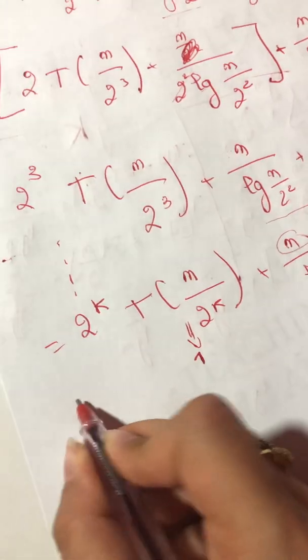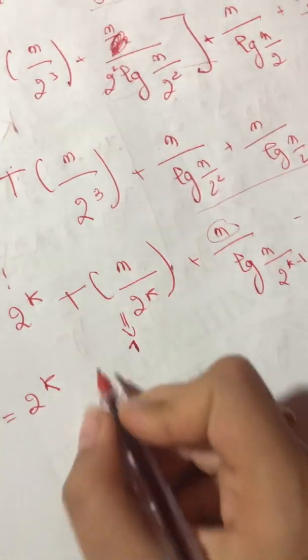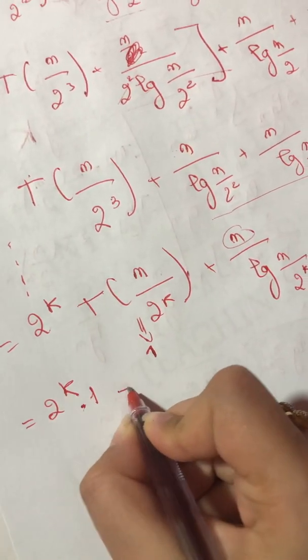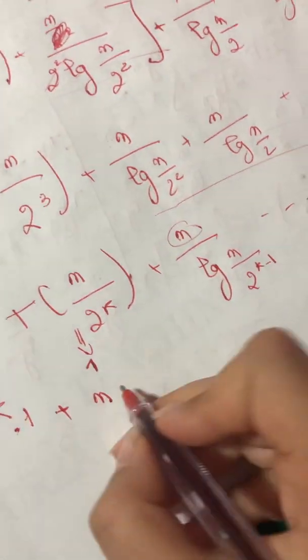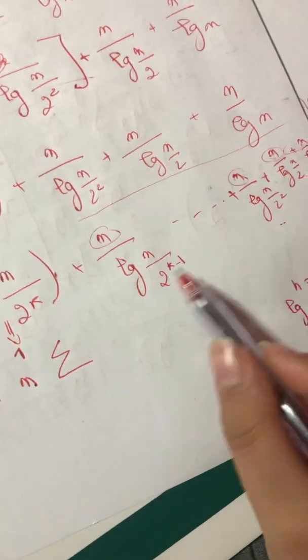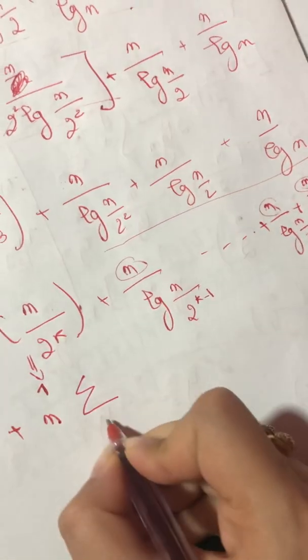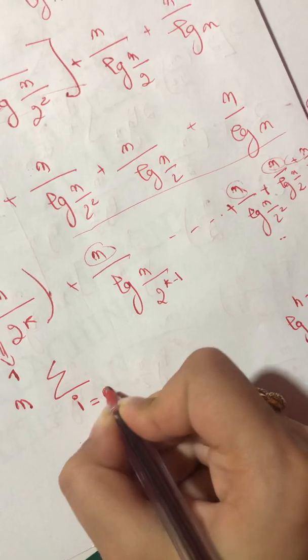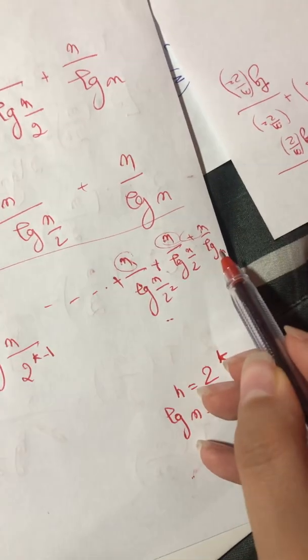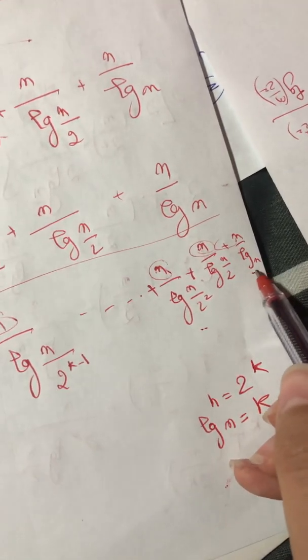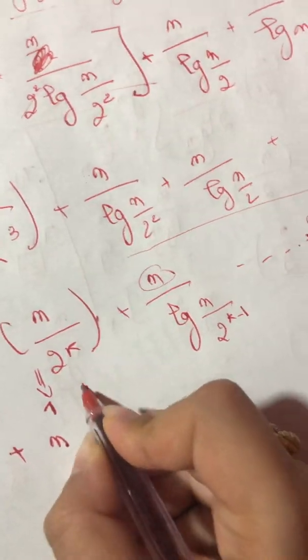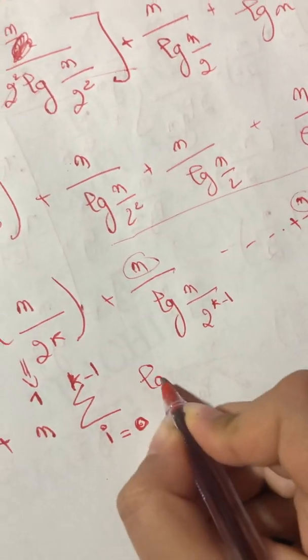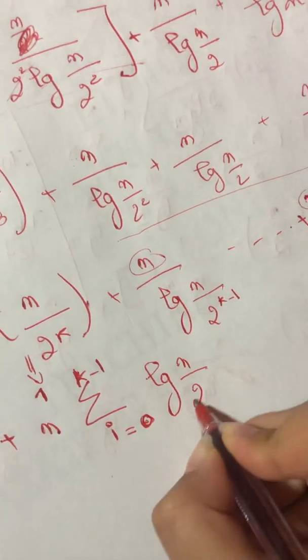So I have now 2^k times 1, again, plus I get the n as a factor. Summation of—I can say that i equals 0, because n/2^0, I can't see 2 here. So it's i equals 0 until k minus 1 of log(n/2^i). But I know that n equals 2^k.